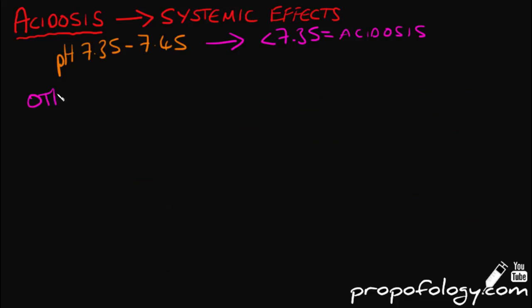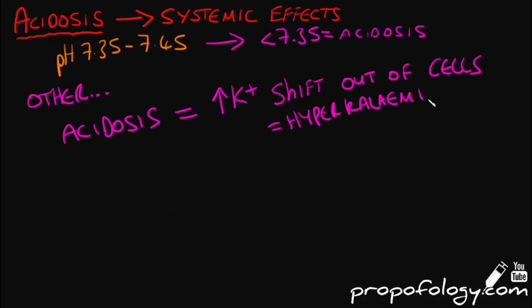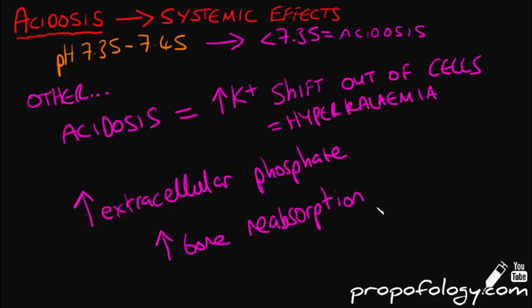I've already mentioned some of the other things that occur with acidosis in the body, such as the shift of potassium out of cells that causes hyperkalemia, and you need to watch out for the heart when this happens. This is seen particularly in a metabolic acidosis and only when caused by non-organic acids. You will also see things like an increase in extracellular phosphate and an increased bone reabsorption rate in chronic metabolic acidotic states.